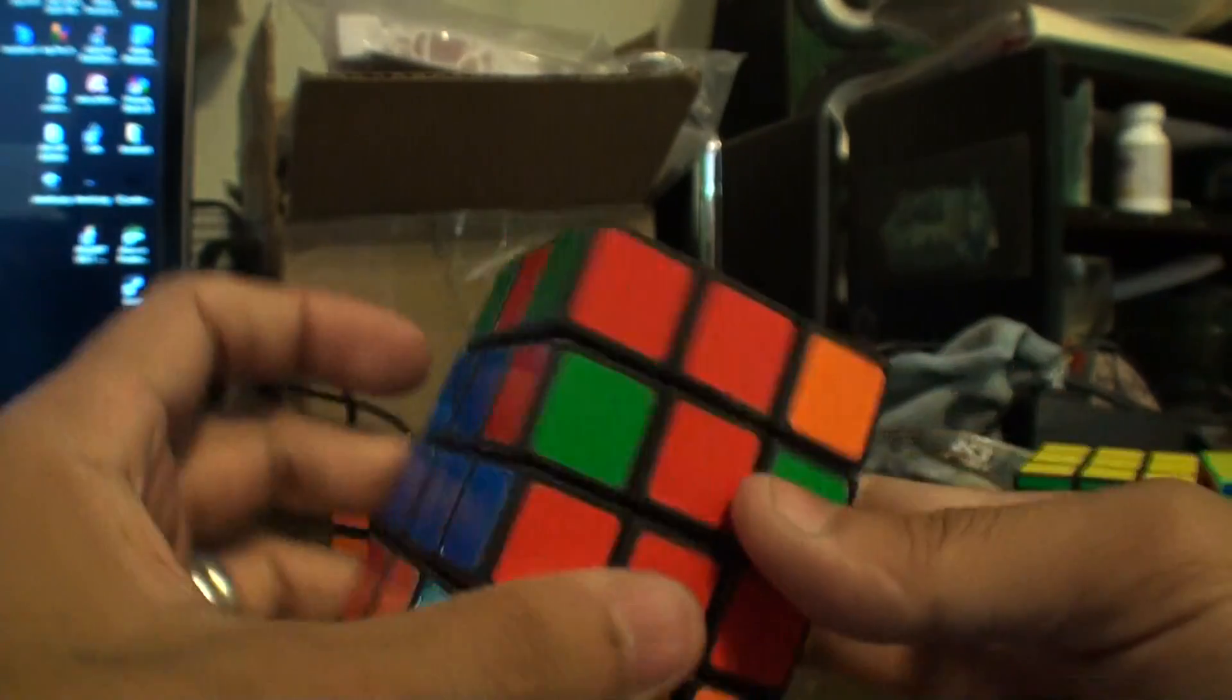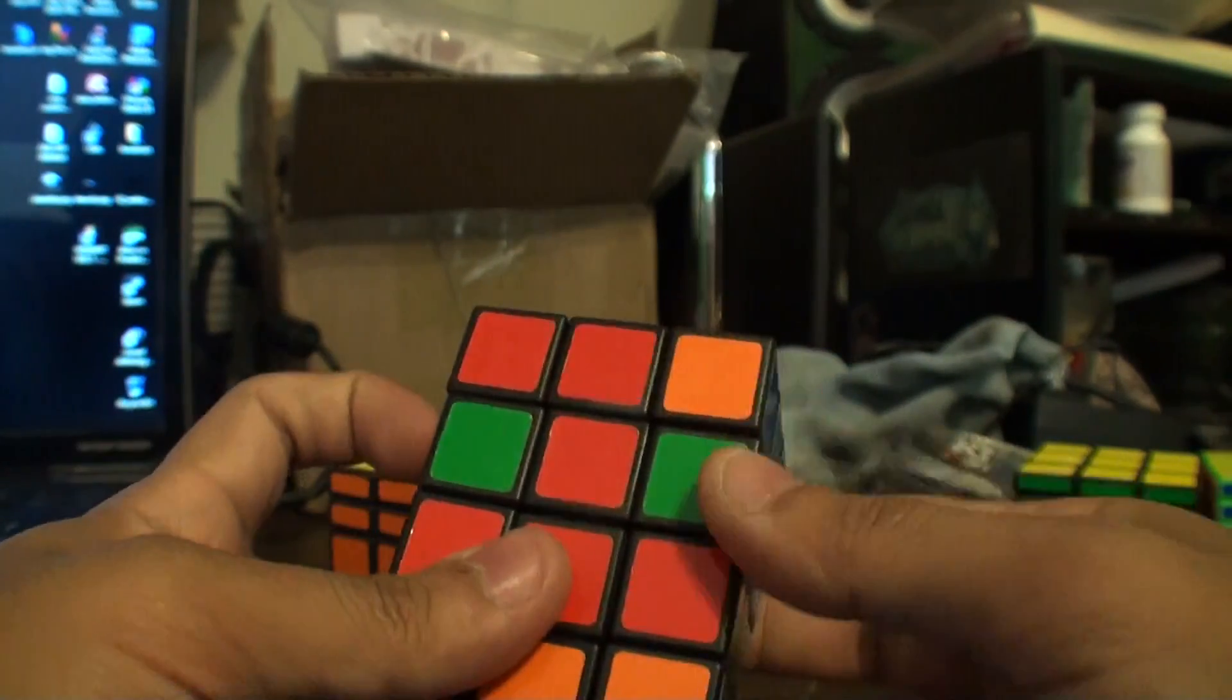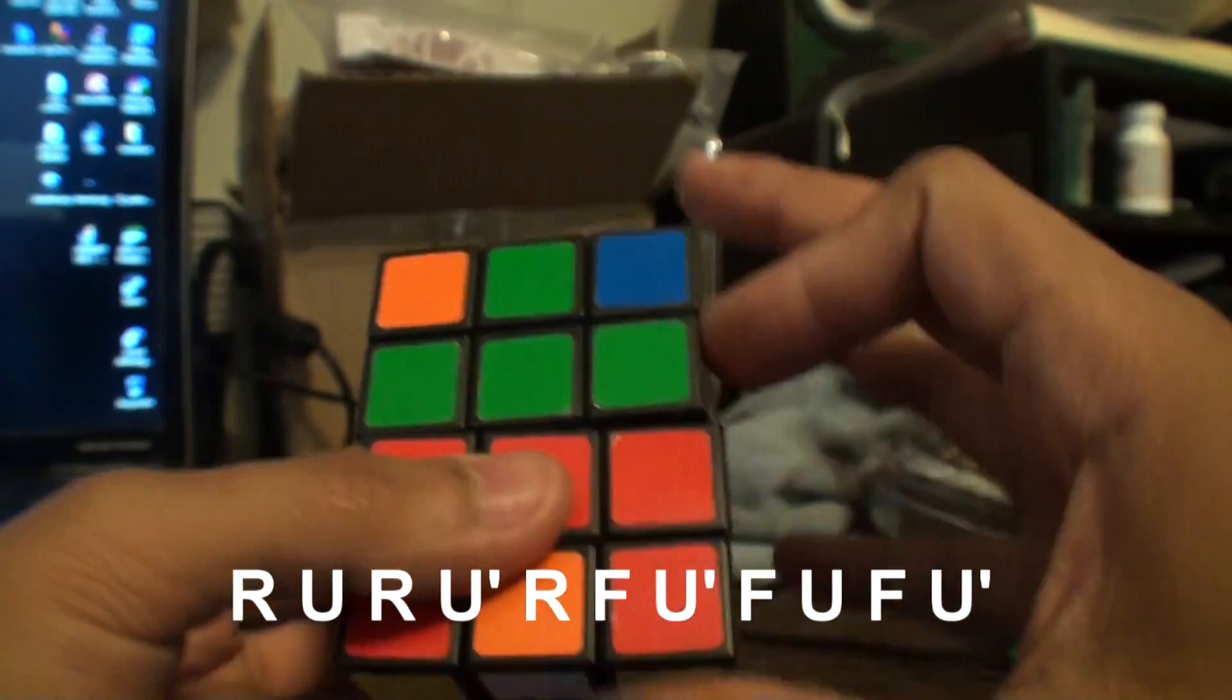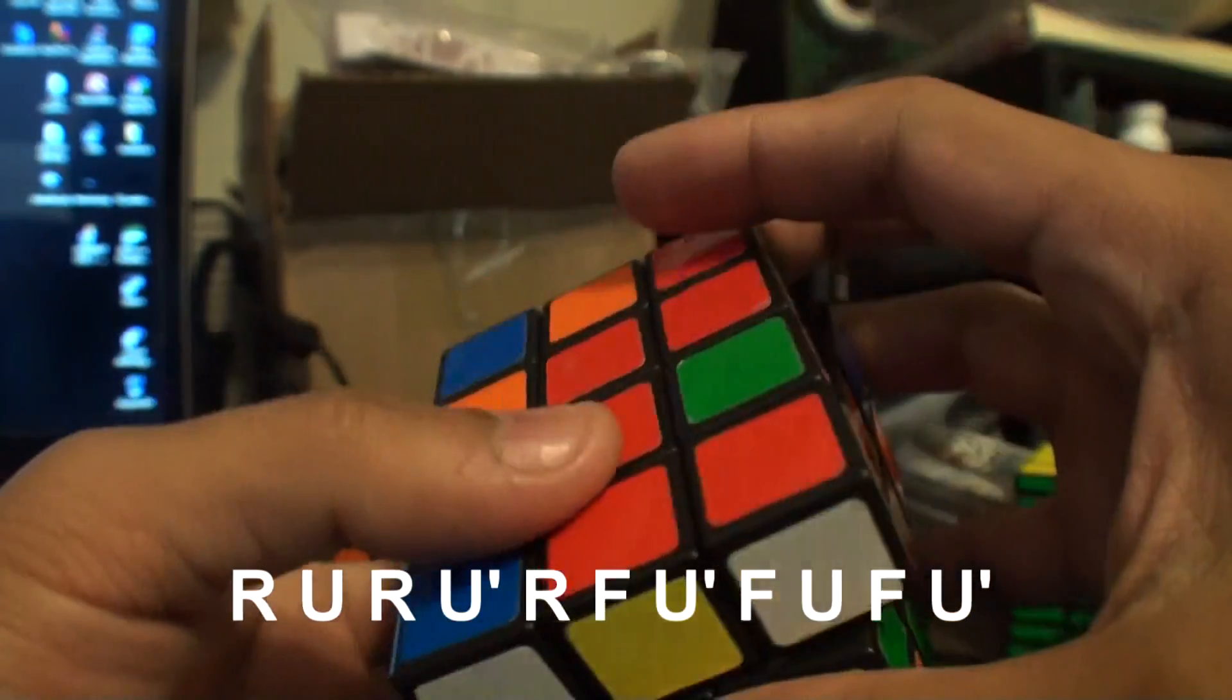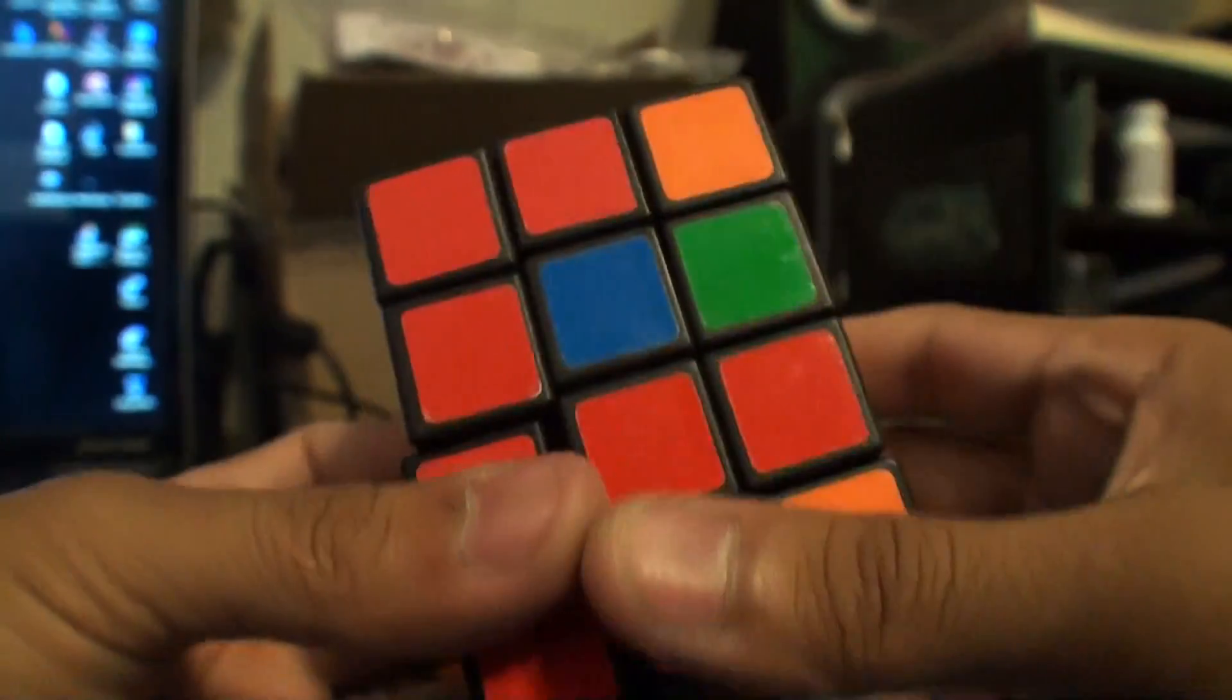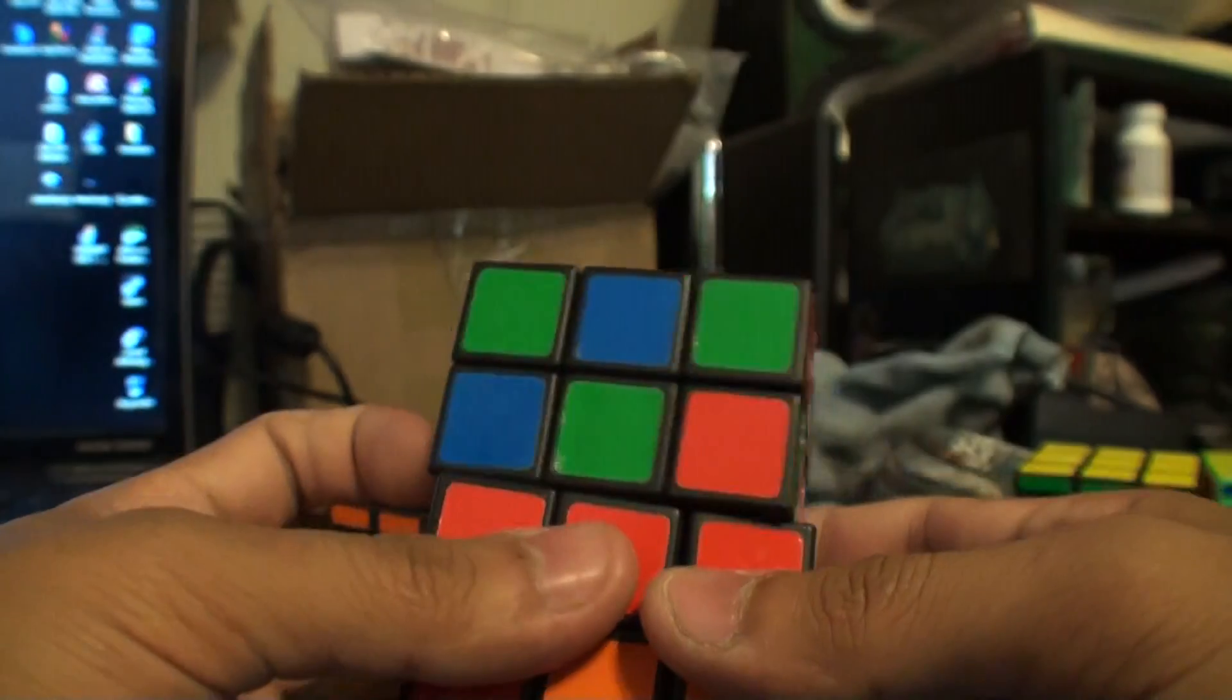And that should bring all the corner pieces back. So now we're going to swap these two pieces. And then we'll just have these last two pieces to worry about. So if you swap these two corners on top, it's R U R U' R F U' F U F U'.